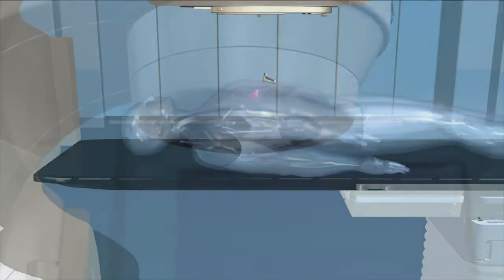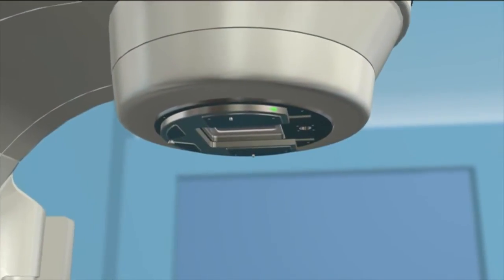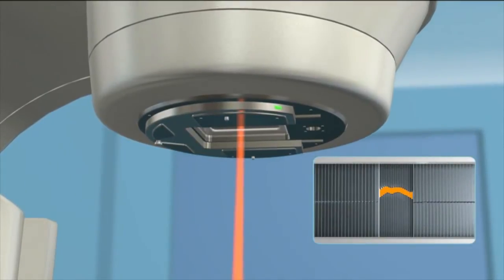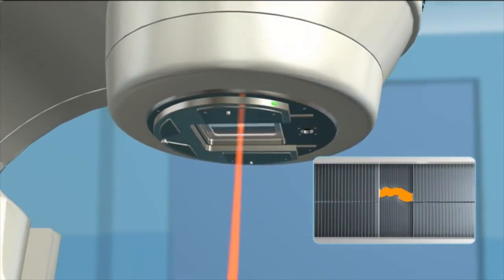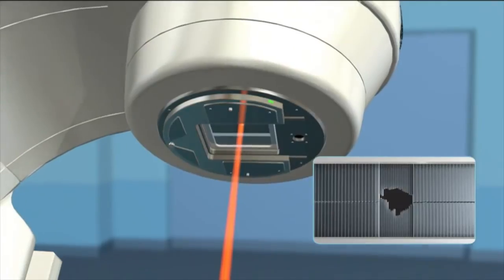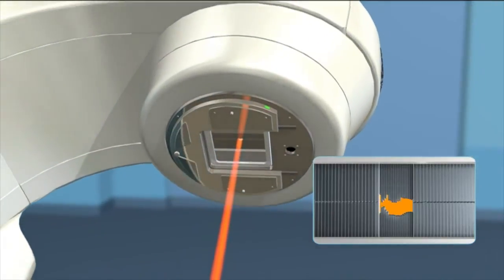The top of the machine, called a gantry, houses a multi-leaf collimator, which simply put, is a set of leaves that continually adjust to precisely match the shape of the treatment beam to the shape of the tumor from every angle.